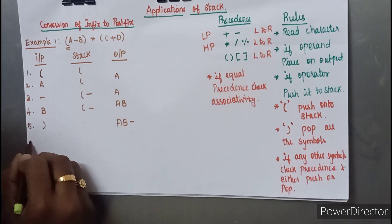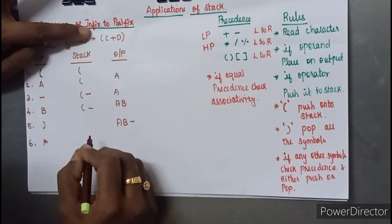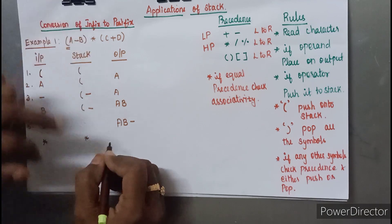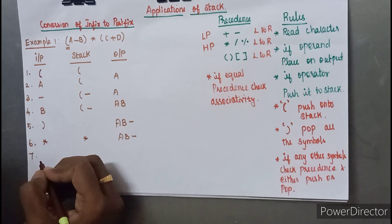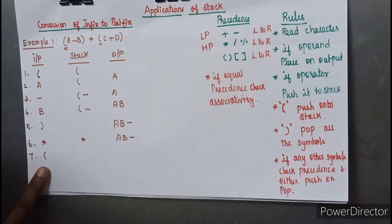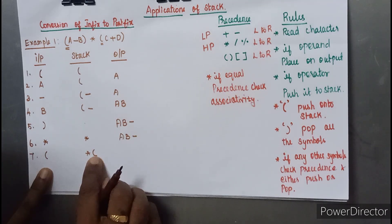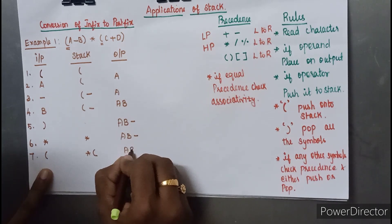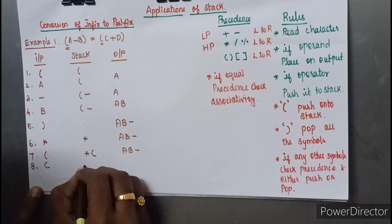The next character read is star (*). There is nothing in the stack so we push the star onto the stack, and the output remains 'ab-'. The next character is an open parenthesis, so we push it onto the stack since it has higher precedence. The output string remains the same.